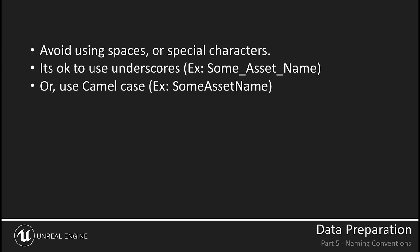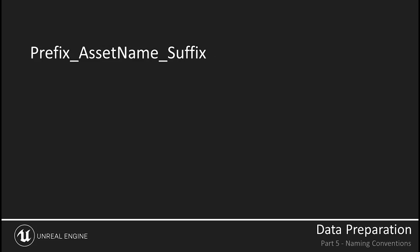Let's establish a few ground rules. Never use spaces when naming things — if you need a space, use an underscore instead, or use camel case to differentiate words without using spaces or underscores. Avoid using any other special characters like number signs, dollar signs, etc., as these can potentially cause issues and don't add useful information to file names. Bear in mind that Unreal Engine does not enforce naming conventions, so it's up to you to make sure you do. A best practice is to use a simple pattern of prefix, asset name, suffix, separated by underscores, and keep each part as short as possible.